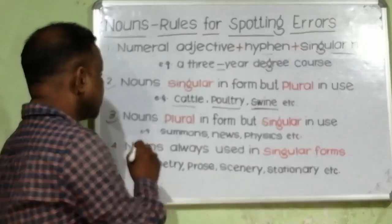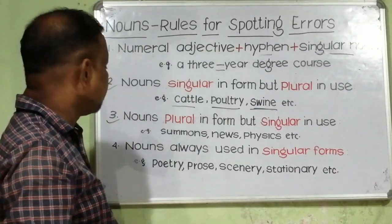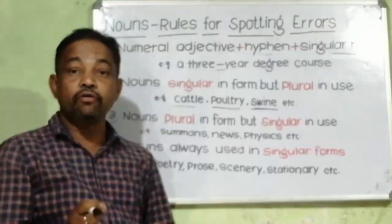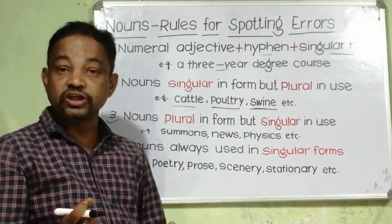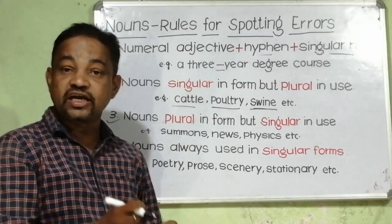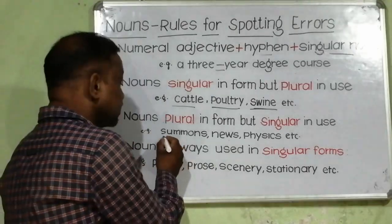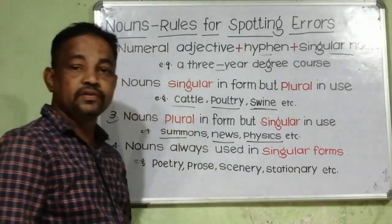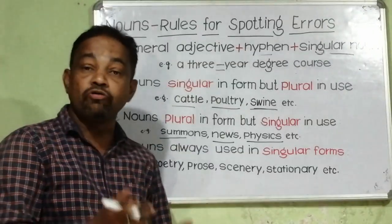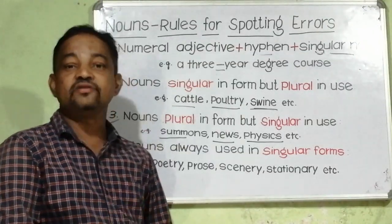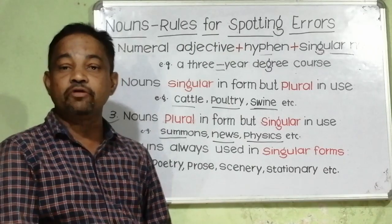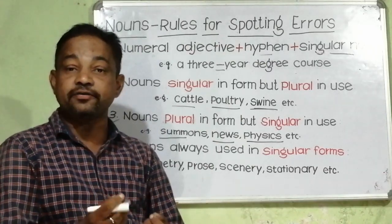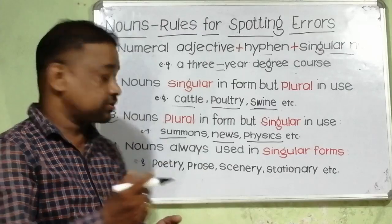Rule number three: nouns plural in form but singular in use. There are some nouns that look like plural nouns but they are used as singular nouns. For example, bad news travels fast. You cannot say bad news travel fast.